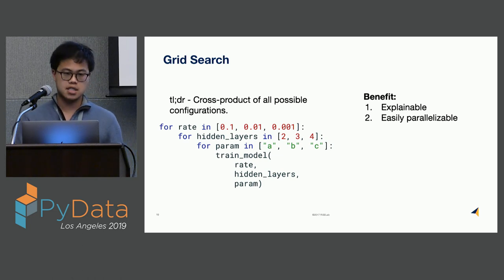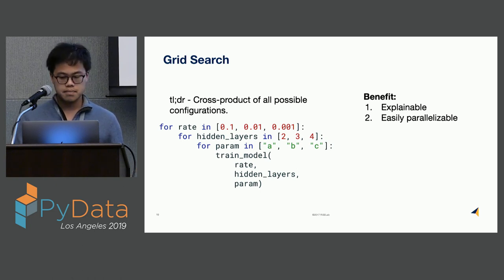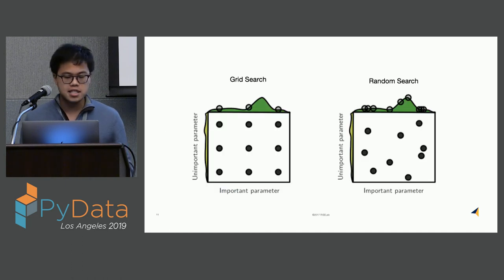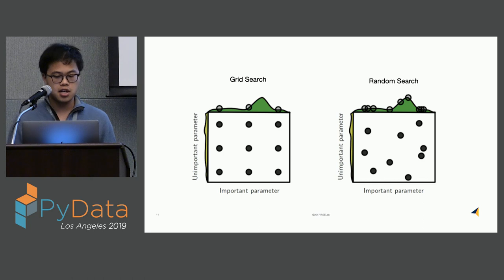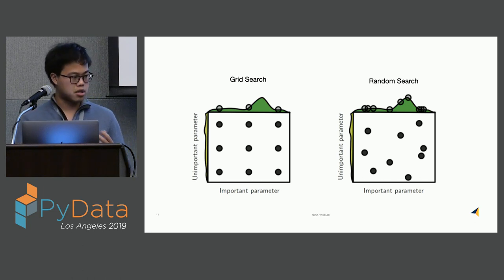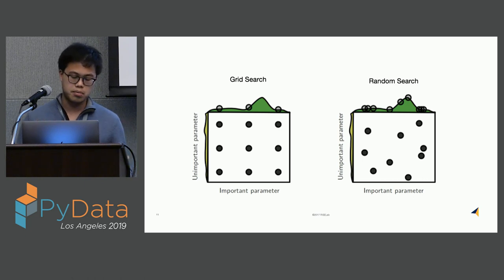However, if you're simply trying to optimize model accuracy, grid search is very inefficient. Here's a graphical representation of why: a grid search can fully miss the optimal point of an important parameter shown on the x-axis. Random search, which I'll talk about next, provides much better coverage across different hyperparameters, in exchange for the structural interpretability you get from grid search.